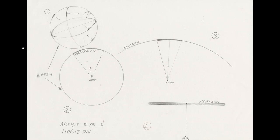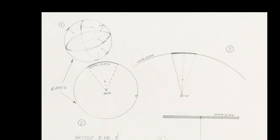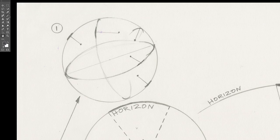In plate number five we're looking at the horizon line. I can't tell you how important understanding the horizon line is — what it is, how we get it, and how we distort it a little bit in our observation. Let's take a look. We have four different sub-illustrations here: number one, two, three, and four.